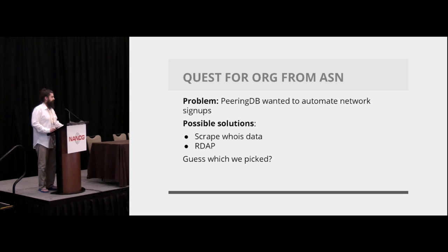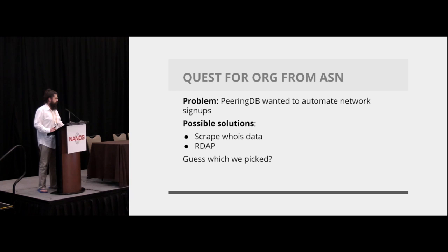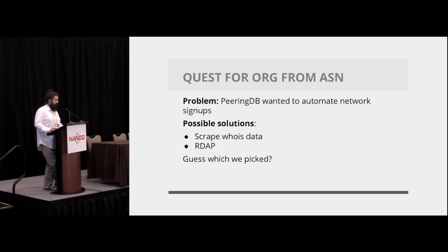This all started with PeeringDB wanting to automate network signups because we authenticate that each user actually belongs to the AS they register. We had a choice of using a client library that scraped WHOIS data and tried to normalize it — which would be at the whim of the RIR, since even if the library works now, a change later could inadvertently break it — or we use RDAP, which is as yet incomplete but we know the data we get is correct and will remain correct. So we obviously picked RDAP. All we wanted to get was all emails associated with the AS and the organization name.